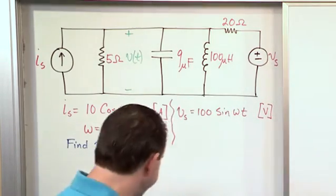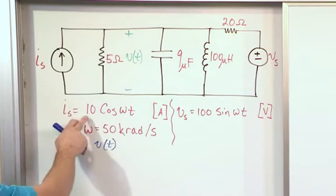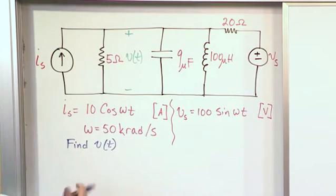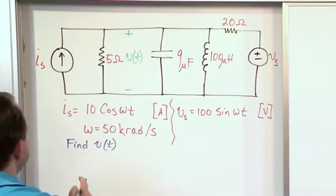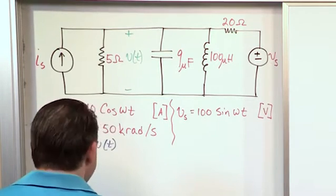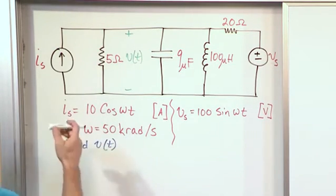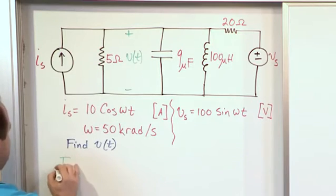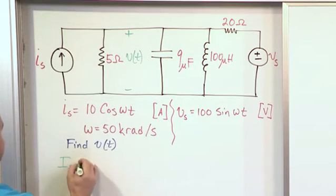All right. So first things first, we're given the current here, but we're given it in terms of a function of time. So we need to turn this current into a phasor current. So I'll go ahead and switch this around. So for this I sub s here, I sub s, it's capital I, that's phasor I.